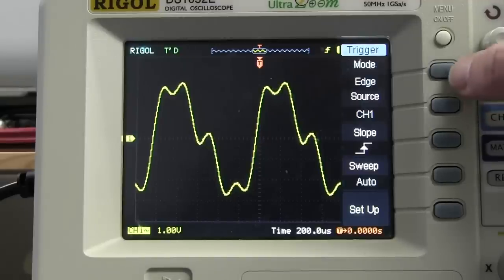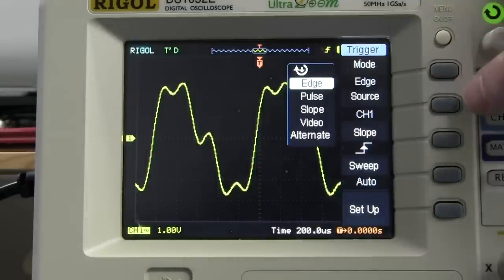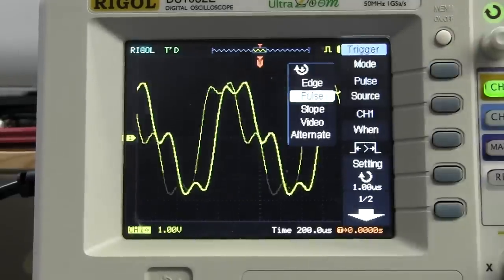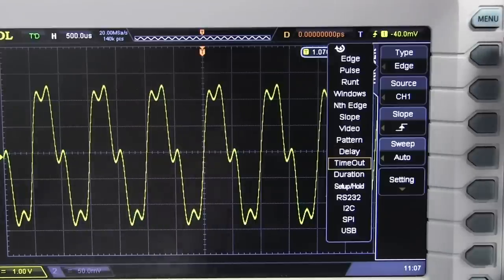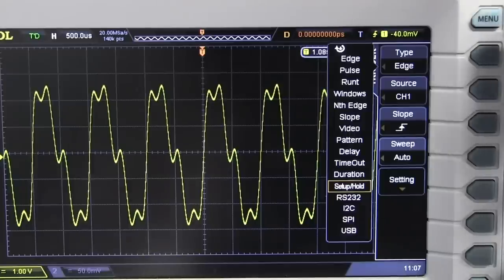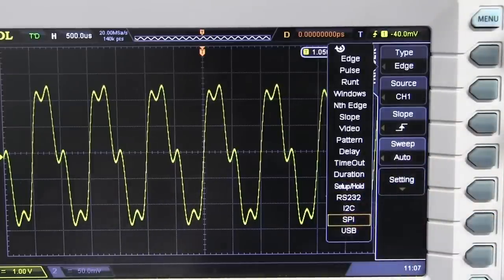And there's been a big step up in the number of trigger modes. All we had back then is edge, pulse, slope, video, and alternate. That's it. On the DS-2000, we have more than we can poke a stick at. Runt pulses, windows, nth edge, slope, pattern, delay, timeout, duration, setup and hold, and then we've got the various serial protocol triggers as well.